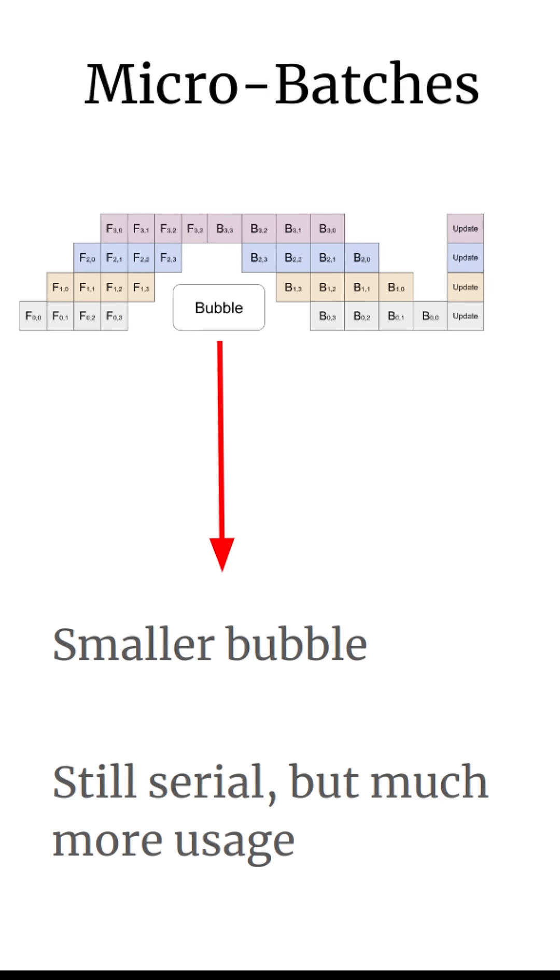This is from a paper known as GPipe. Since then, many other forms of doing this pipelining has come out, and all of them kind of reduce the bubble in ways similar to what I'm describing above.